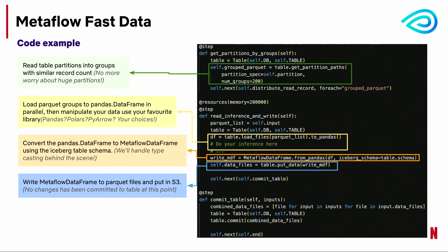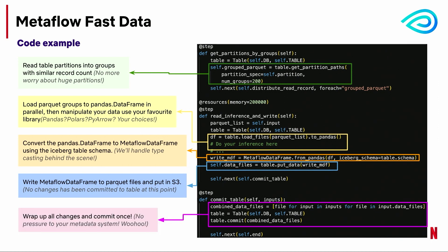Finally, we put the Metaflow DataFrame as Parquet files and put them in S3. At this moment, no change has been committed to the table, because instead of committing the write in each parallel node and crashing your metadata system, what we do is wrap up all the changes later, generate the table metadata change based on that, and then only commit once. In this way, there will be no pressure at all on your metadata system. With these 20 lines of code, you've completed a round trip for gigabytes or terabytes of data in your Metaflow flow.